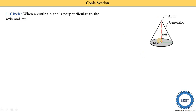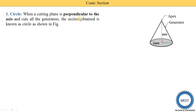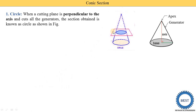Now we use this image as a reference for understanding the further shapes of conic sections. First is the circle — when the cutting plane is perpendicular to the axis. This is the axis, and perpendicular plane means the plane is at 90 degrees to the axis and cuts all the generators. The section obtained is known as the circle. The section plane is perpendicular to the axis — the axis is vertical and this plane is horizontal — and this plane cuts all the generators. When we see this view from the top, we can see the circle.